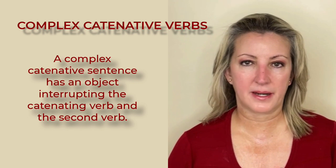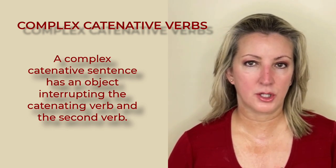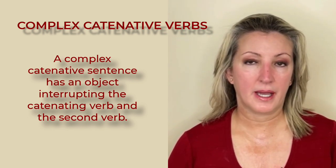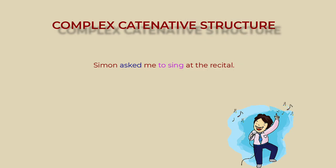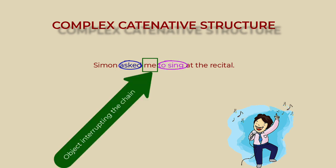Let's look at complex catenative verbs. The complex catenative sentence has an object interrupting the catenating verb and the second verb. 'Simon asked me to sing at the recital.' This is an example of a complex catenative structure because the object 'me' interrupts the catenated structure. 'Asked' is the catenative verb and 'to sing' is catenated or linked to 'asked.'